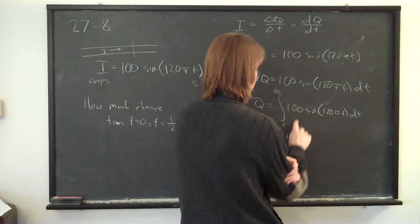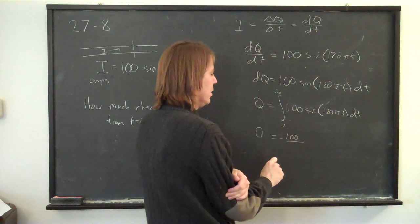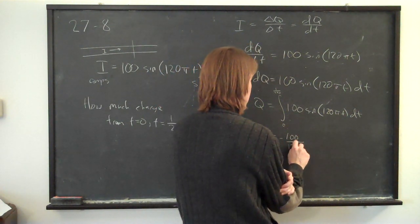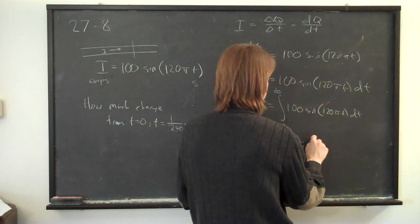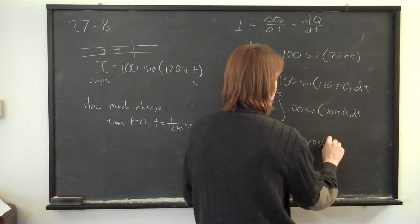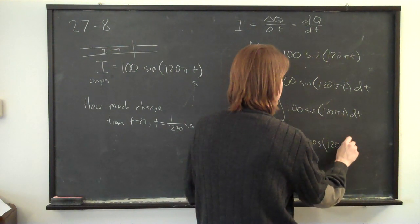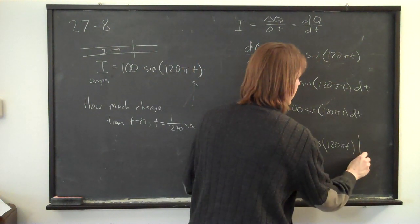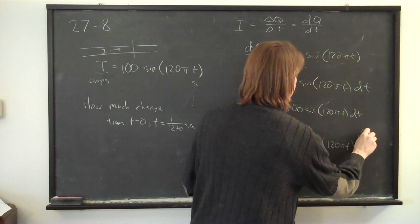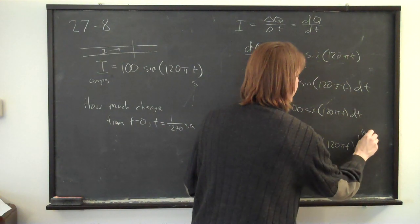So minus, because the integral gives you a minus sine, one hundred is the amplitude. One hundred over one twenty pi. Sine up to cosine, one twenty pi t. And that's being evaluated between zero and one two hundred and fortieth of a second.